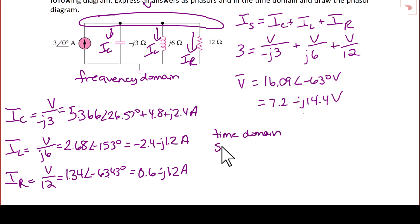So next, we will write the answers in the time domain or in the sinusoidal steady state. And the first value we're going to write is IC of t. Recall, these are RMS values. So we're going to write IC of t is equal to 5.366 square root of 2 cosine omega t plus 26.57 degrees.